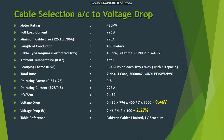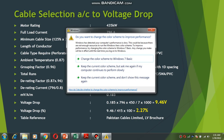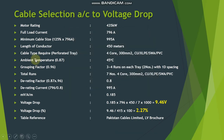For cable selection according to voltage drop, our motor rating is 435 kilowatts, full load current is 796 amperes, minimum cable size is 995 amperes, and the length of the conductor is 450 meters from motor to panel, which is quite long. The voltage drop must fulfill the IEC standard: less than 5% or between 2.5 to 5% under normal conditions, and 10 to 15% under motor starting conditions. The cable type we are using is 4-core 300mm² copper XLPE armored.